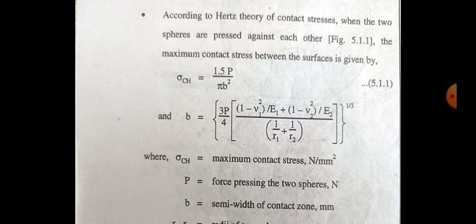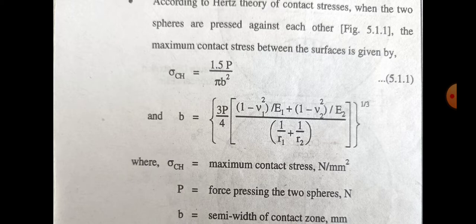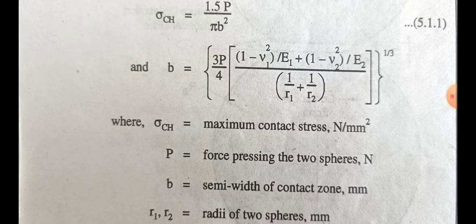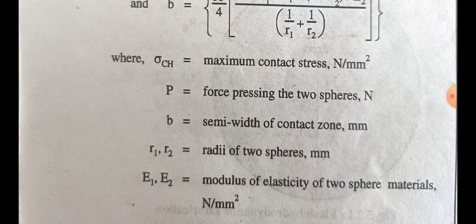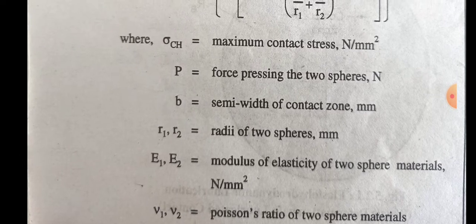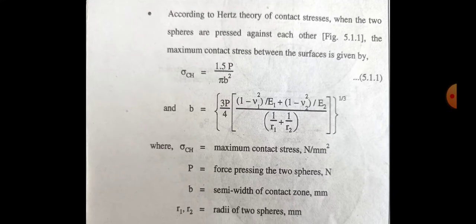According to the theory of contact stresses, when two spheres are pressed against each other, the maximum contact stress is given by: σ_ch = 1.5 × P / (π × b²), where b = [3/5 × P/4 × ((1 − ν₁²)/E₁ + (1 − ν₂²)/E₂) / (1/R₁ + 1/R₂)]^(1/3). Here σ_ch is the maximum contact stress, P is the pressing force, b is the semi-width of the contact zone, R₁ and R₂ are the radii of the spheres, E₁ and E₂ are moduli of elasticity in N/m², and ν₁ and ν₂ are Poisson's ratios.